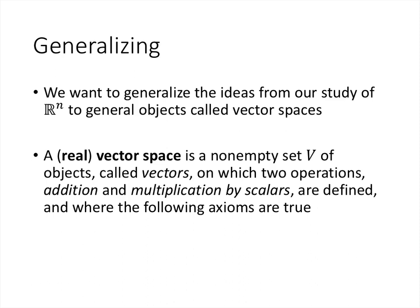So the definition here is that a vector space, or sometimes called a real vector space, is just a non-empty set of objects, which we call vectors, on which we have two operations, addition and multiplication by scalars. And where all of those ten axioms that we just talked about are true, except they're true for this mysterious set V, rather than for the slightly less mysterious set ℝⁿ.